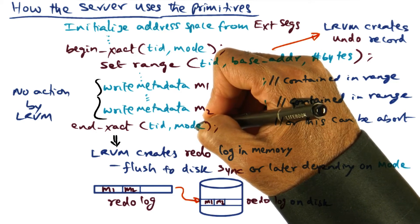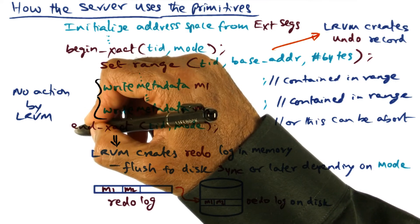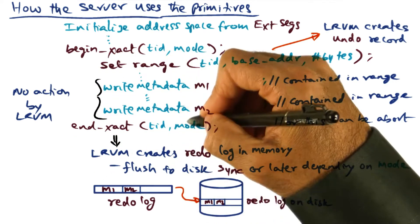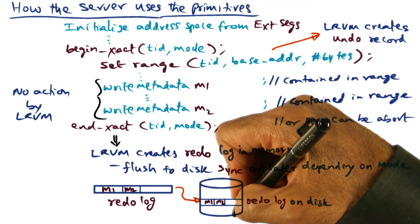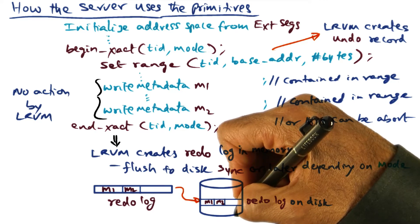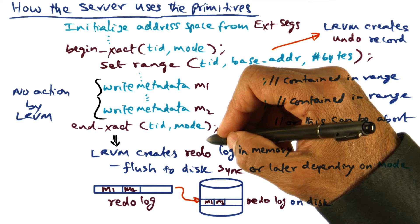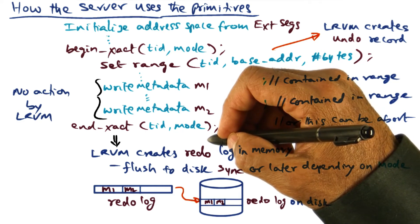Transaction semantics would require that the process that is executing this commit should not be allowed to go past this point until the synchronous I/O has completed from the redo log into the disk. But in order to make it a more performance conscious design, if you think that power failures are rare and the chances that your server is going to crash is not very high,